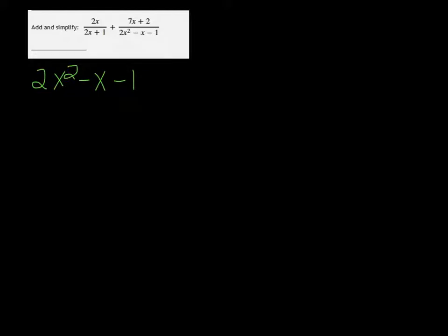You can factor any way you want. The way I like to do it is to multiply the a and the c. So 2 times negative 1 is minus 2. And I want factors of minus 2 that add up to negative 1.